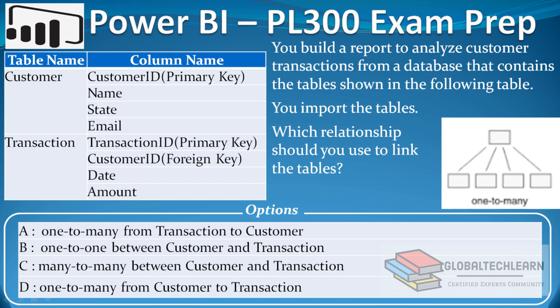On the left side we can see the table name and column name. Under table name we have two tables: Customer and Transaction. For the Customer table we have columns customer ID, name, state, and email — and customer ID is the primary key. Under the Transaction table we have transaction ID as the primary key, customer ID as the foreign key, and then date and amount.